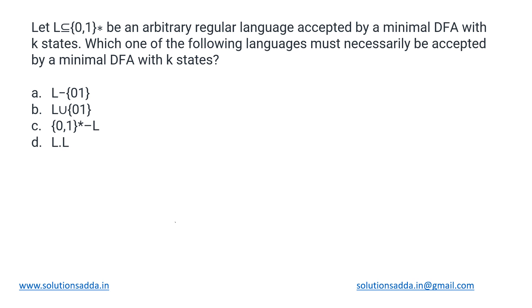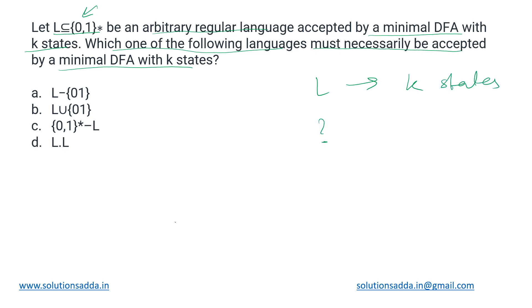This question on DFA: we have been given a language L in closure of {0,1}, an arbitrary regular language accepted by a minimal DFA with k states. We need to determine which of the given languages must necessarily also be accepted by a minimal DFA with k states. It does not have to be the same DFA — we just need to find which other languages also require exactly k states in their minimal DFA.